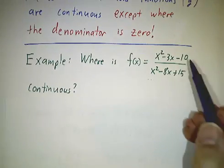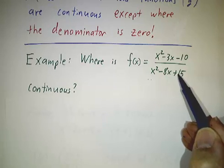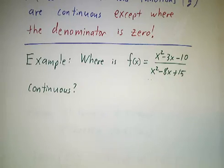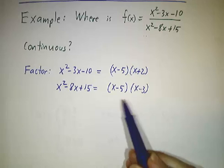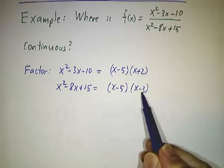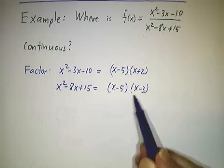So where is this rational function continuous? Well, we first have to see where is it defined. Where is the denominator non-zero? So if you factor the top and the bottom, you see the denominator is 0 at 5 and at 3. So those are points where the function doesn't exist, certainly can't be continuous.